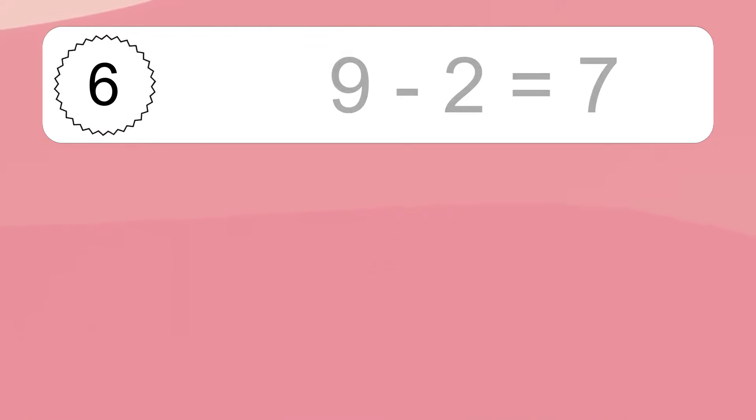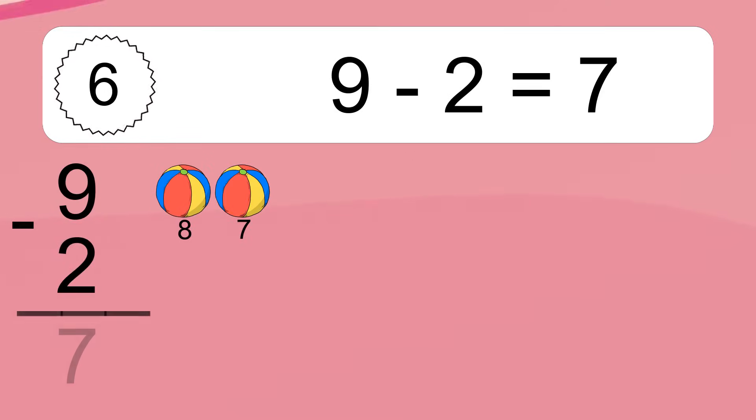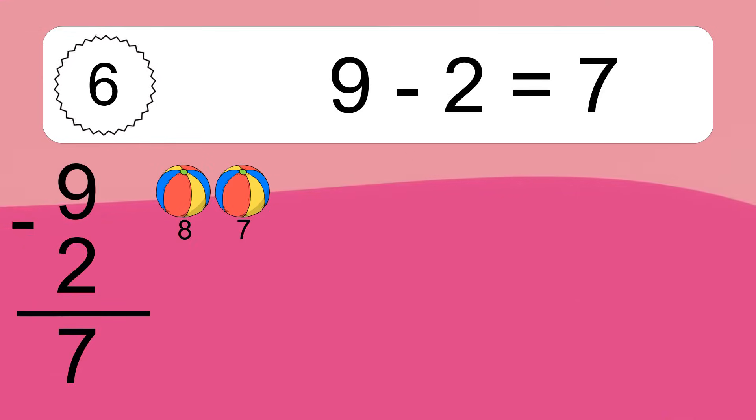9 minus 2 equals what? 9 minus 2 equals 7. Let's count it: 8, 7.